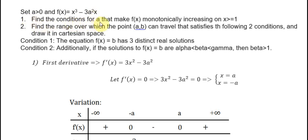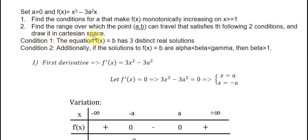Question 1: Find the condition for that. Make the function f monotonically increasing on s greater than or equal to 1. Question 2: Find the range over which the point A, B can travel that satisfies the following two conditions and draw it in the Cartesian space.